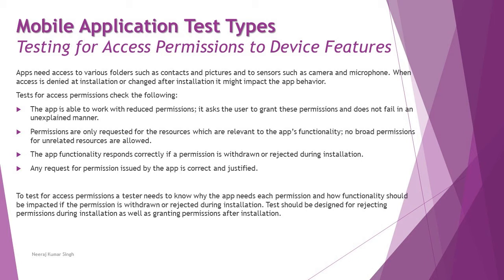Tests should be designed for rejecting permissions during installation as well as granting permissions after installation — both directions matter. During installation, check if permissions are accepted or denied. Then after installation, check if they are turned on or turned off. Both cases should be tested at both points to understand how the app behaves when these conditions are met.